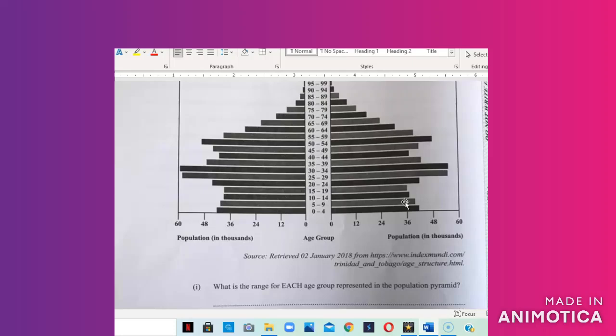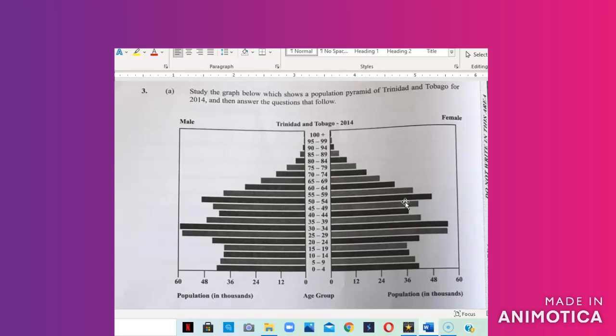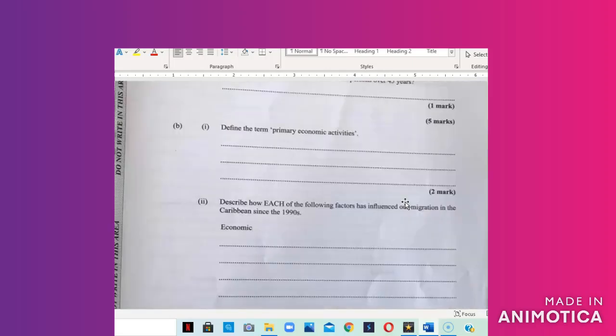Part five asks which age range has the largest number of persons over 45. So over 45, which age range has the largest? 45 is located here. However, the 50 to 54 has the largest amount of persons within that age range. At the front of the pyramid the bars become smaller. So that's it for section A. Once you have answered those questions correctly, you would have received the five marks.